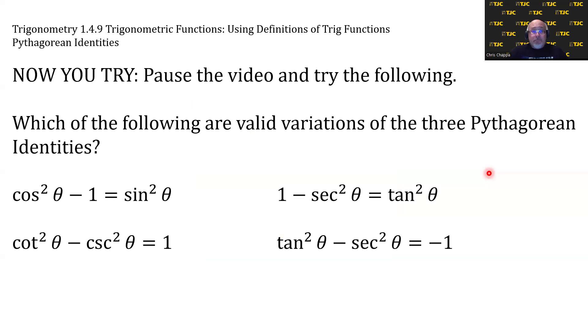Now you try. Pause the video and try the following. Which of the following are valid variations of the three Pythagorean identities? Look carefully. Pause the video. Give it a try.